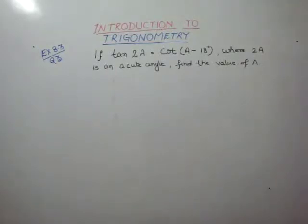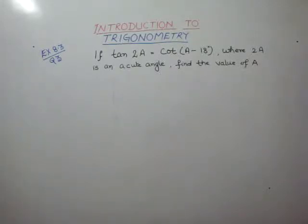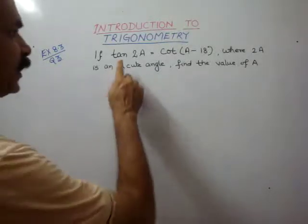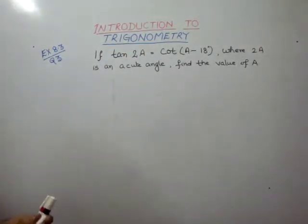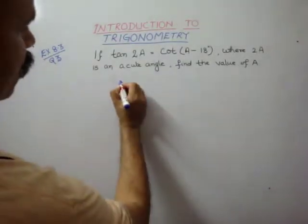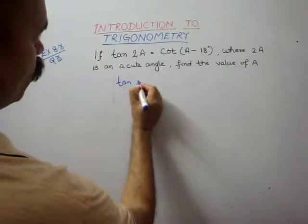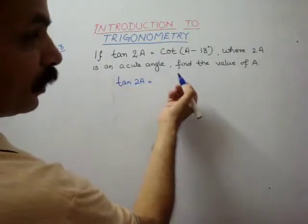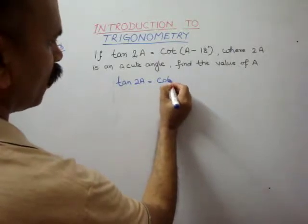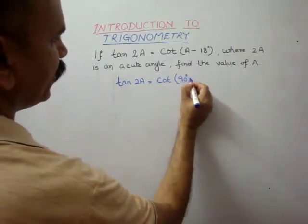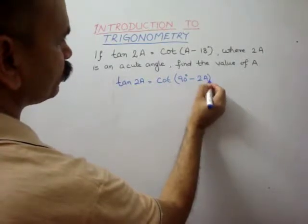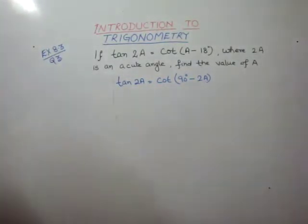Your question is: if tan 2a is equal to cot(a minus 18 degrees), where 2a is an acute angle, find the value of a. Now, what is tan 2a? tan 2a is equal to cot(90 degrees minus 2a). So 90 degrees minus 2a is tan 2a.